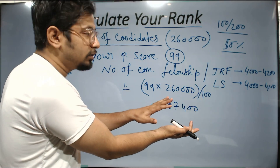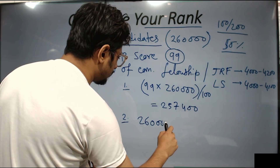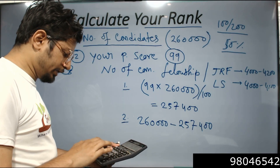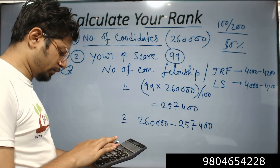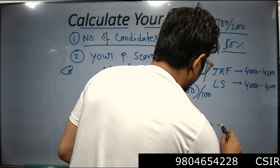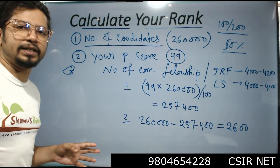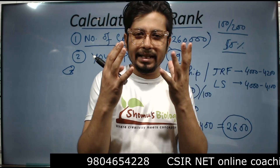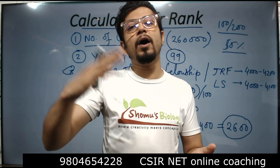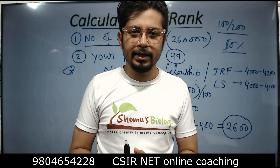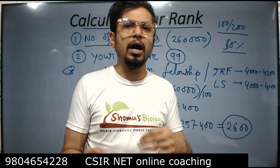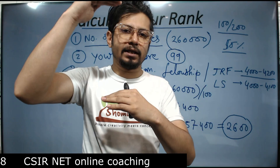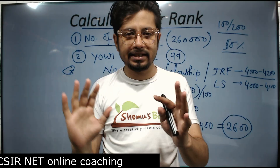Step two: subtract that value from the total number of candidates. So 260,000 minus 257,400 gives you 2,600. Now, 2,600 doesn't seem like a rank because in CSIR NET you can hardly find a rank above 350. We know 99 percentile is a good score, so how is this justified? The four thousand to four thousand two hundred people given JRF are not individually ranked one, two, three up to four thousand — they are ranked only up to approximately 350.